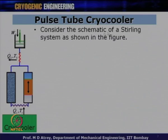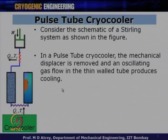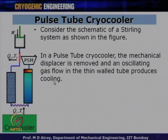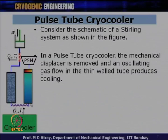Consider the schematic of a Stirling system. If I want to convert this to a pulse tube cryocooler, I will just replace the displacer with a gas column — a cylinder or tube filled with gas. In a pulse tube cryocooler, the mechanical displacer is removed and an oscillating gas flow in a thin-wall tube produces cooling. An empty tube filled with gas is subjected to oscillating pressurization and depressurization, and this generates cooling. This is a simple definition of a pulse tube cryocooler.